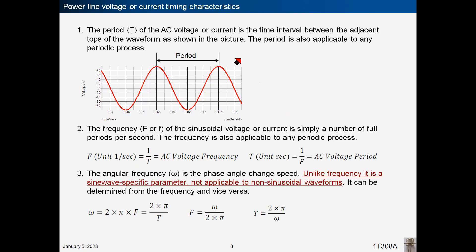The period of the AC voltage or current is the time interval between the adjacent tops of the waveform, as shown in the picture. The period is also applicable to any periodic process. The frequency of the sinusoidal voltage or current is simply a number of full periods per second. The frequency is also applicable to any periodic process.